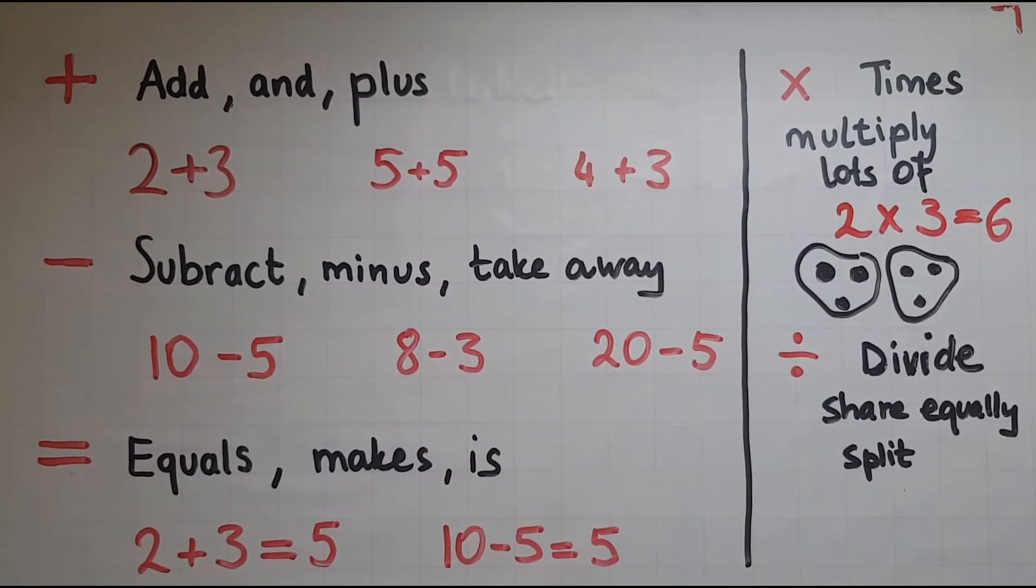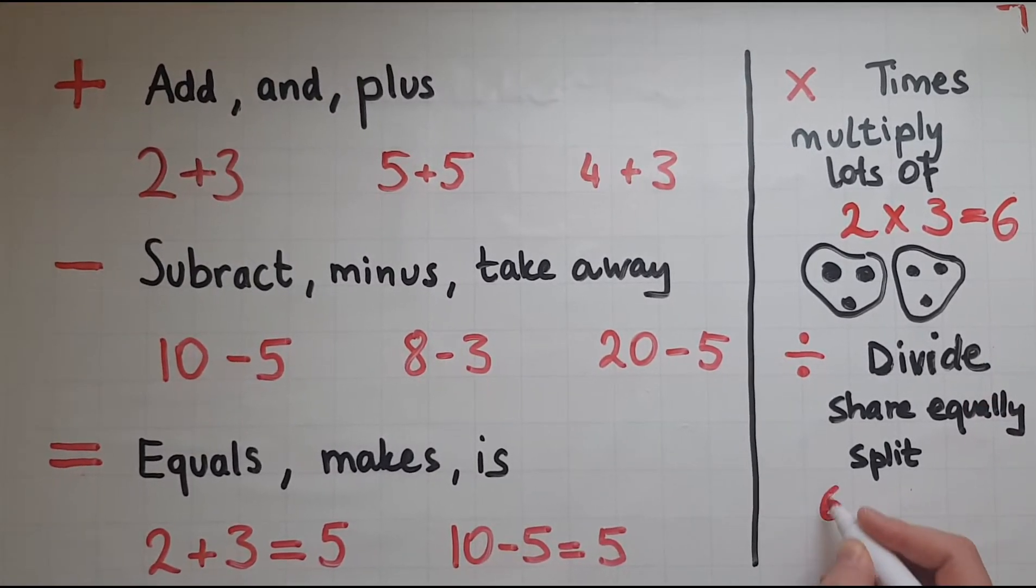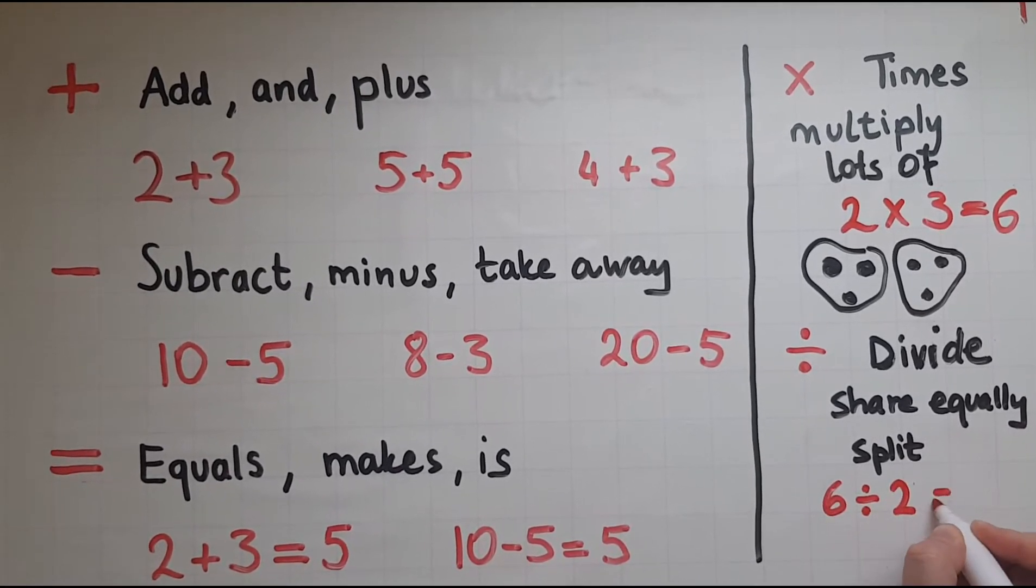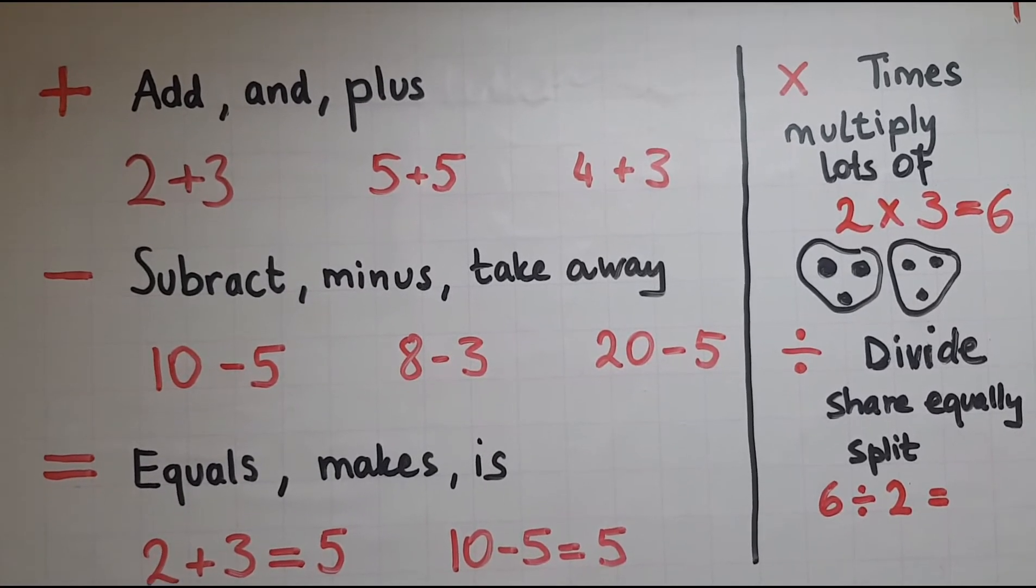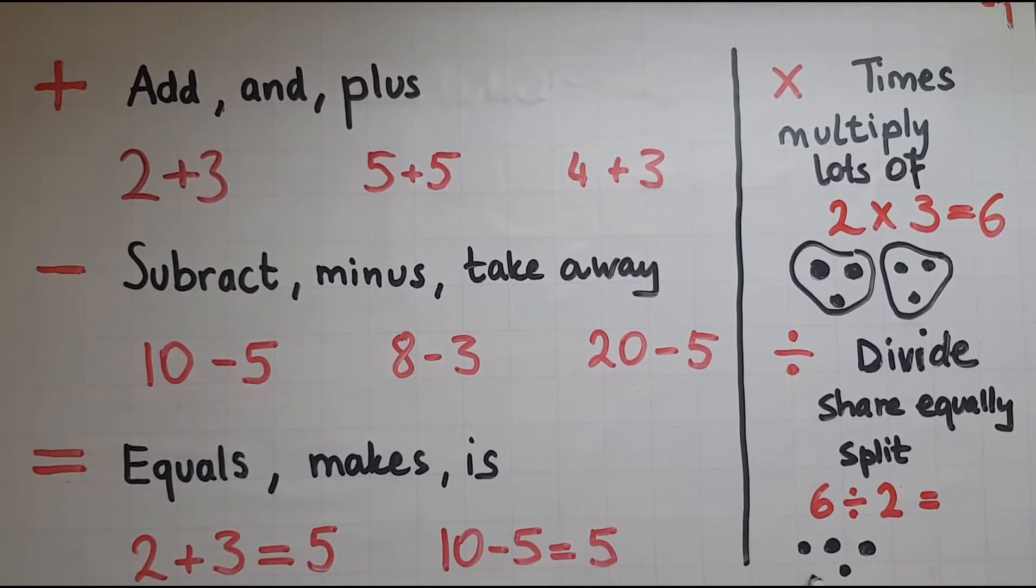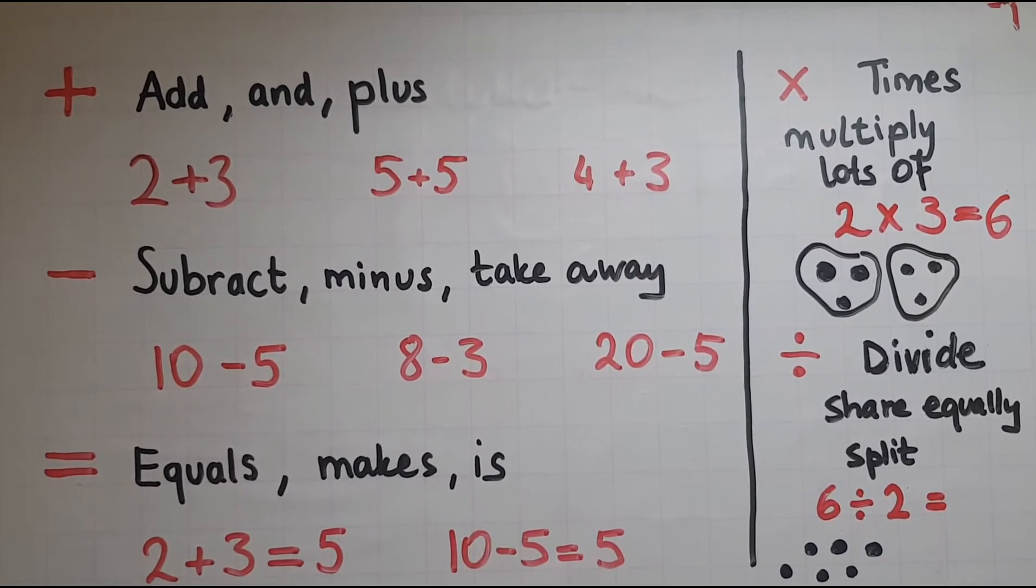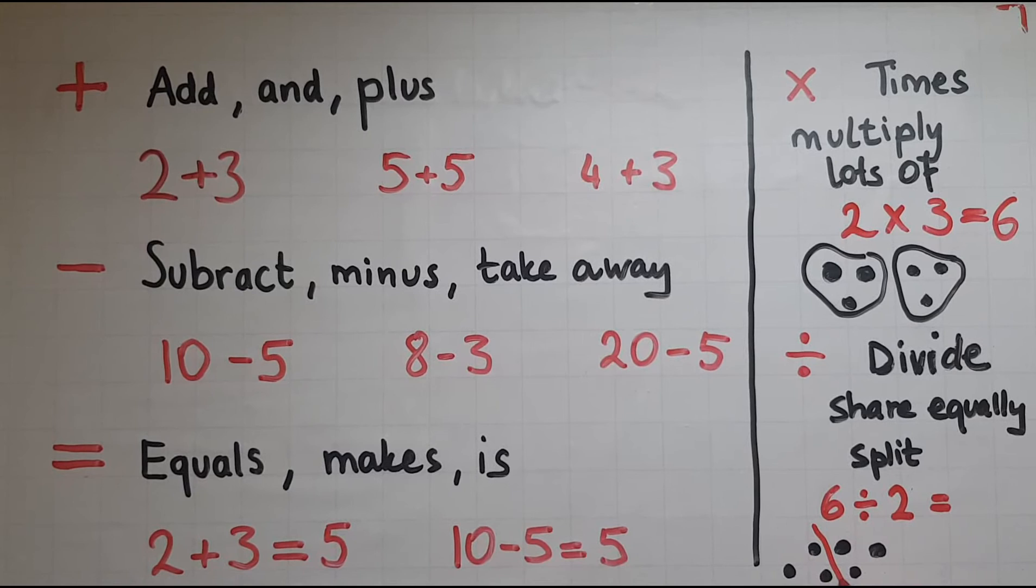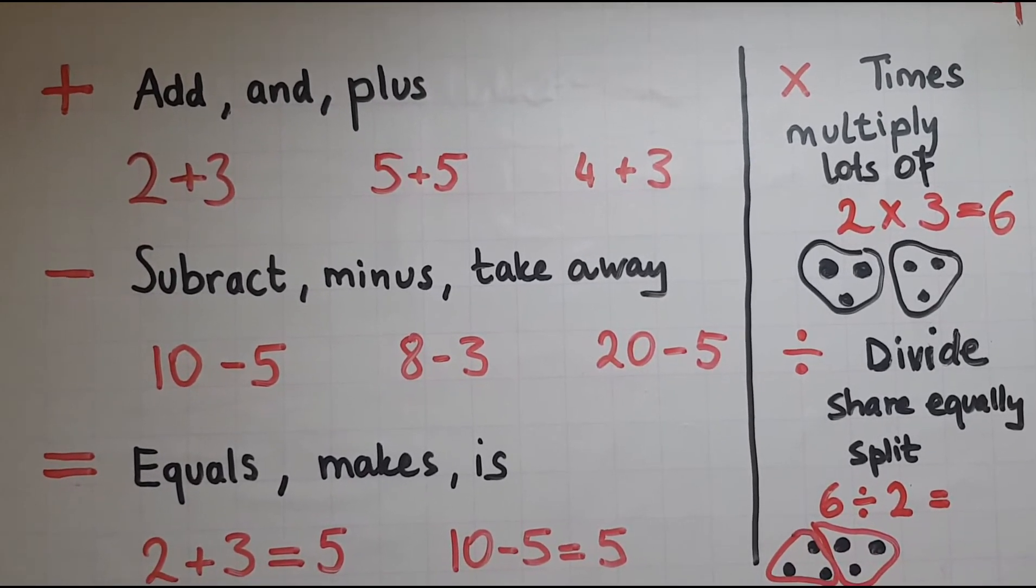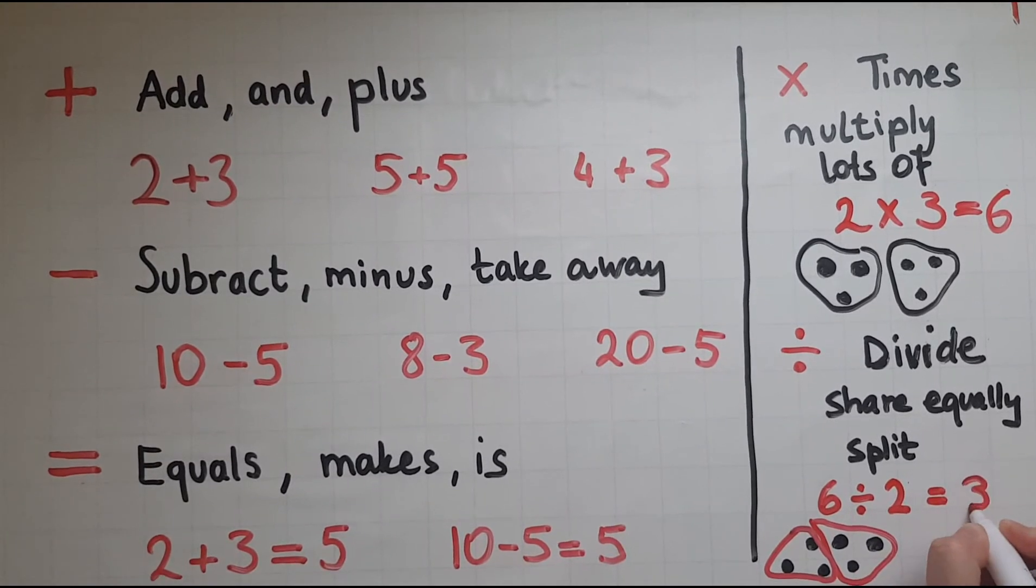Let's get an example. We have 6 divided by 2. If I have 1, 2, 3, 4, 5, 6 coins, and I'm going to split them or share them equally into two parts, then I'll have 3 in one and another 3 in another. They are equal, 3 and 3. The answer is 3.